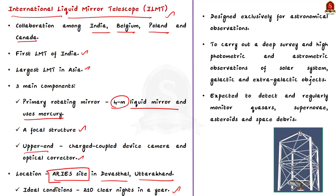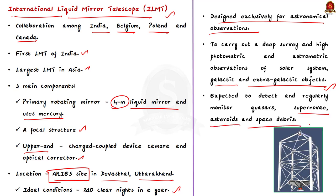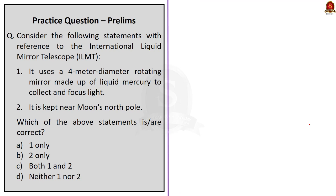The International Liquid Mirror Telescope is the first liquid mirror telescope designed exclusively for astronomical observation. It will be used to carry out deep survey and high photometric and astrometric observations of solar system, galactic, and extragalactic objects within a narrow strip of sky. It is expected to detect and regularly monitor quasars, supernovas, asteroids, as well as space debris. In this discussion, we saw the basics, components, and the recently commissioned ILMT in Uttarakhand.